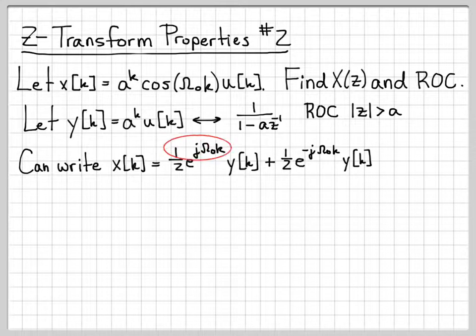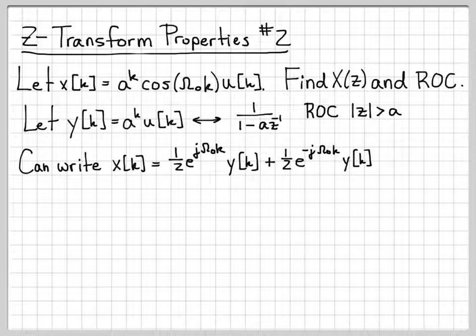So this is a perfectly equivalent way of writing the signal x[k]. And writing it in this way is going to let us apply a Z-transform property pretty easily.